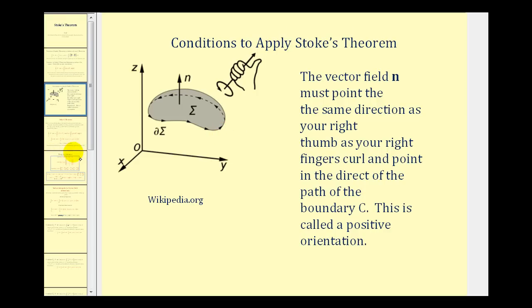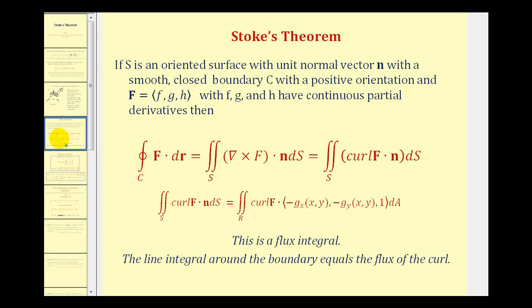Let's go ahead and formalize Stokes' Theorem now. If S is an oriented surface with unit normal vectors N and also having a smooth closed boundary C with a positive orientation, and the vector field F has components with continuous partial derivatives, then we have the line integral of F dotted with dr along C equal to the surface integral of the curl of F dotted with N dS.